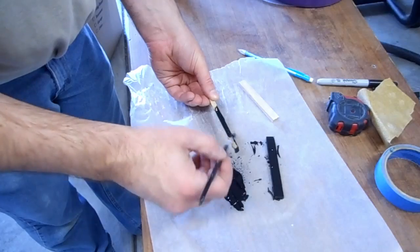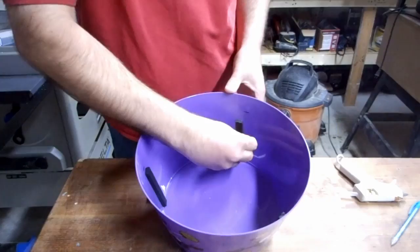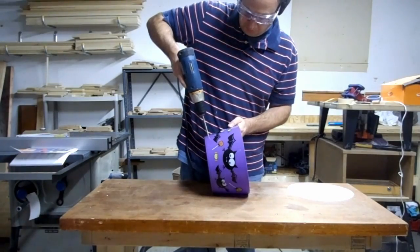This seemed to work as intended, so I painted them black and hot glued them to the sides of the bowl. Then I drilled a hole for the speaker wire.